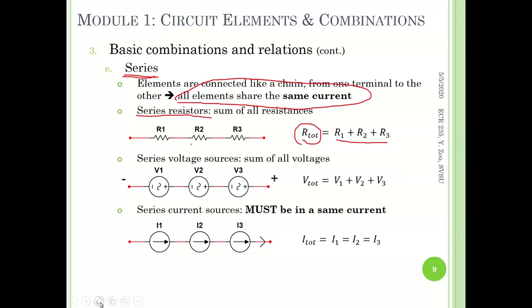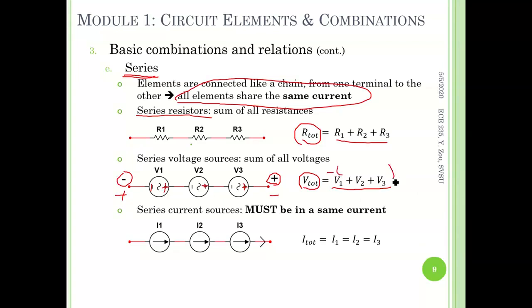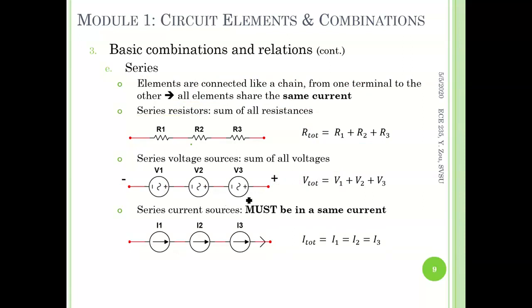We can also have series voltage sources connected together. The total voltage with a predefined polarity is equal to the sum of V1 through V3. Be careful about the defined polarity. If the preset total voltage polarity is opposite, then the total voltage needs a negative sign in front. If V2 has a flipped polarity, then it should have a negative sign as well.